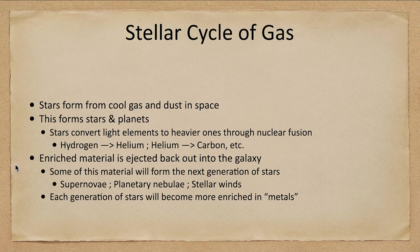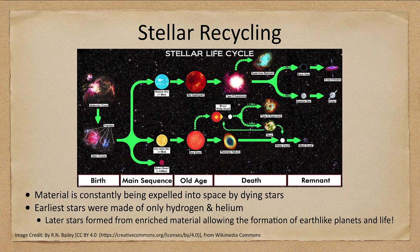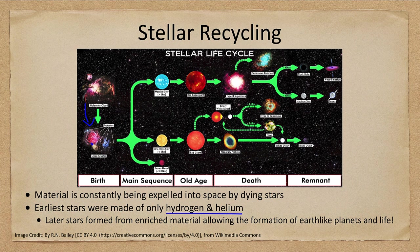Looking at this in schematic form, those earliest stars were only hydrogen and helium. Stars form from molecular clouds as the material condenses down into clusters of stars. What happens to those stars depends on their mass. Some are very low-mass brown dwarfs that don't do much. We have low-mass stars like our sun, and we have high-mass stars much greater than the mass of the sun.